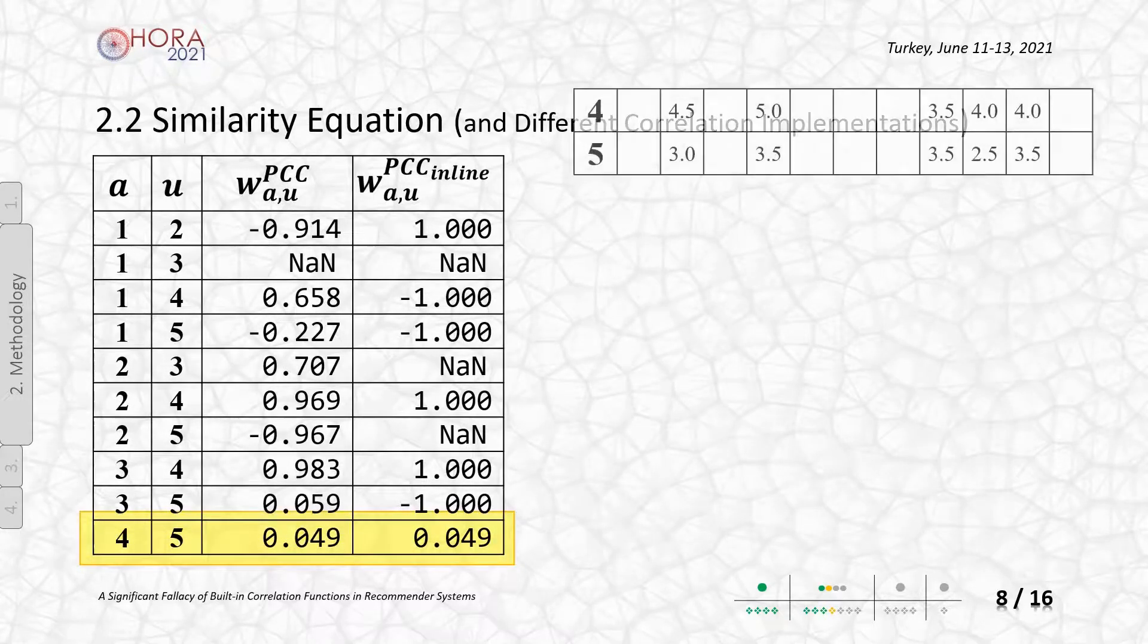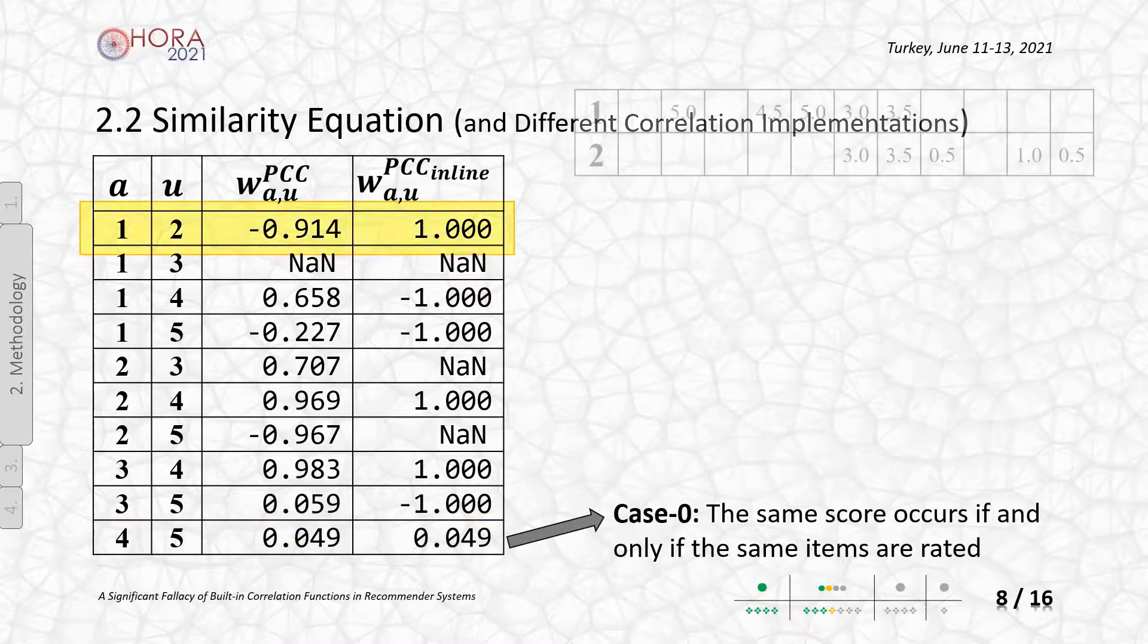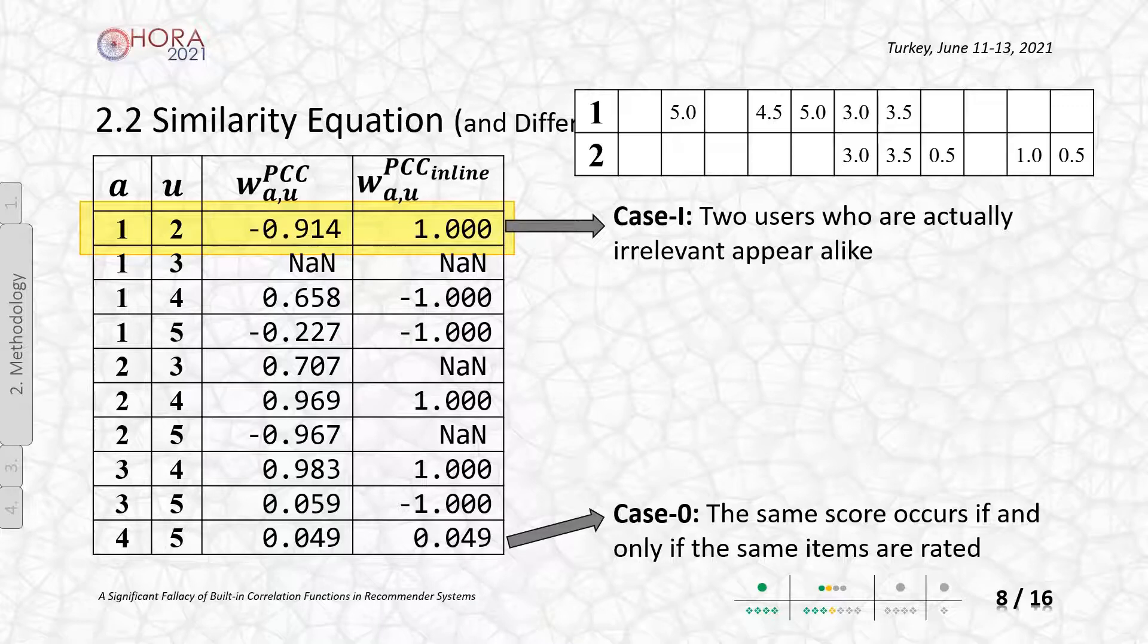The same score for both implementations can be observed if and only if the correlated item set is fully joined with the user's rating history. For the case one, even though first two users have clearly different preferences on the not common items especially, the built-in correlation returns a perfect similarity. That is a fallacy actually.